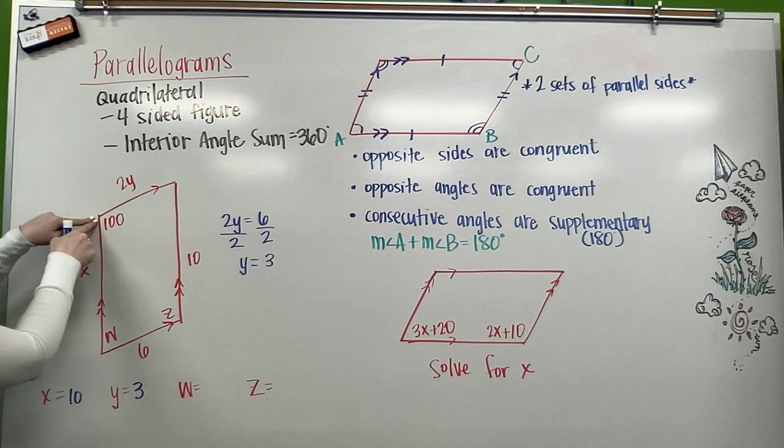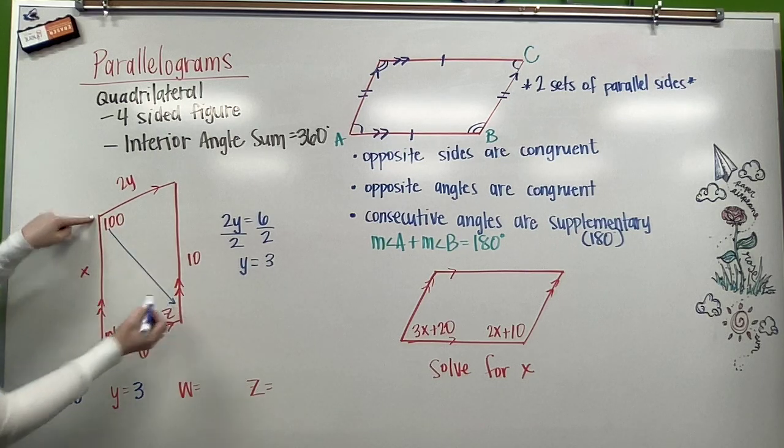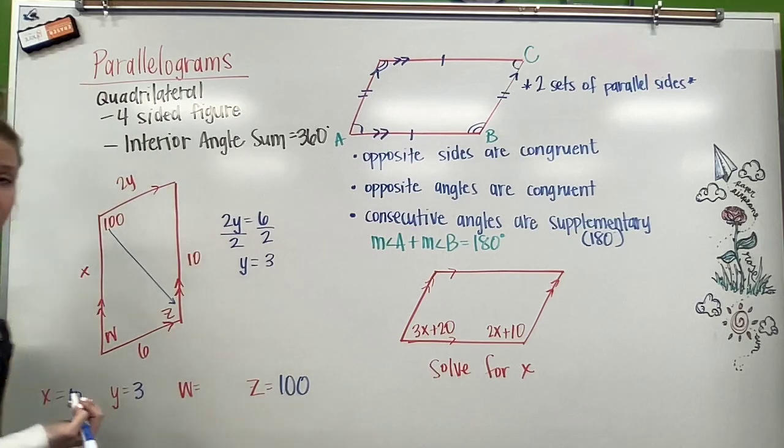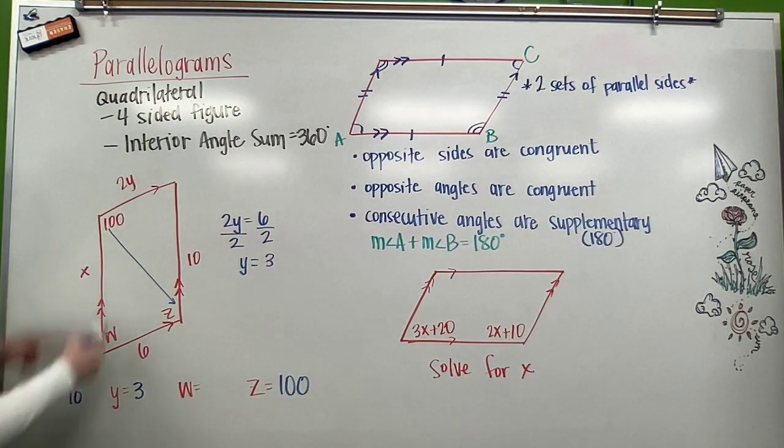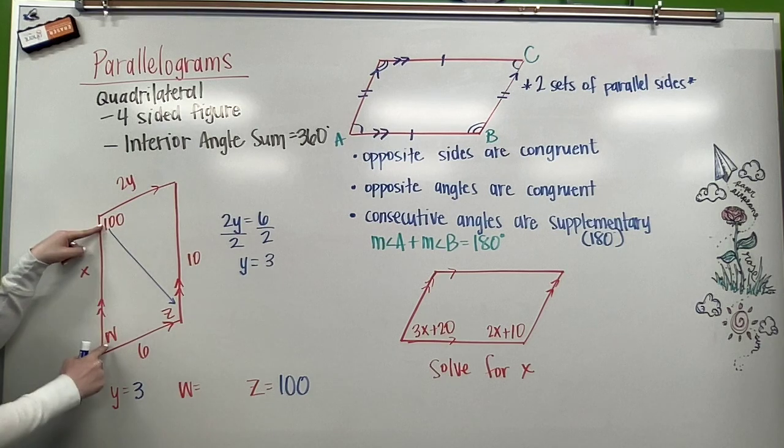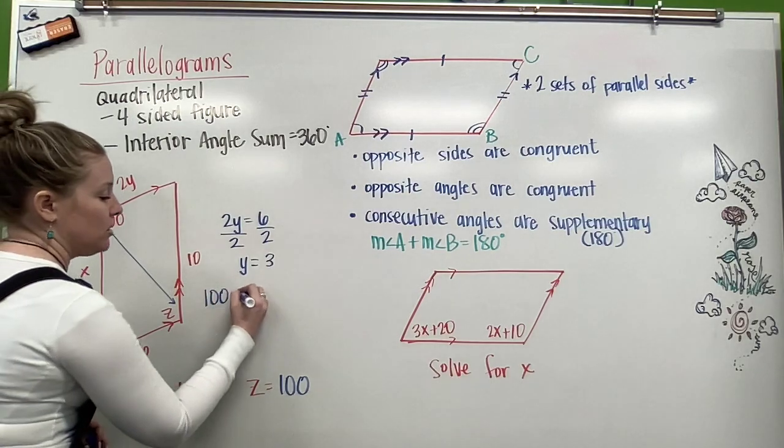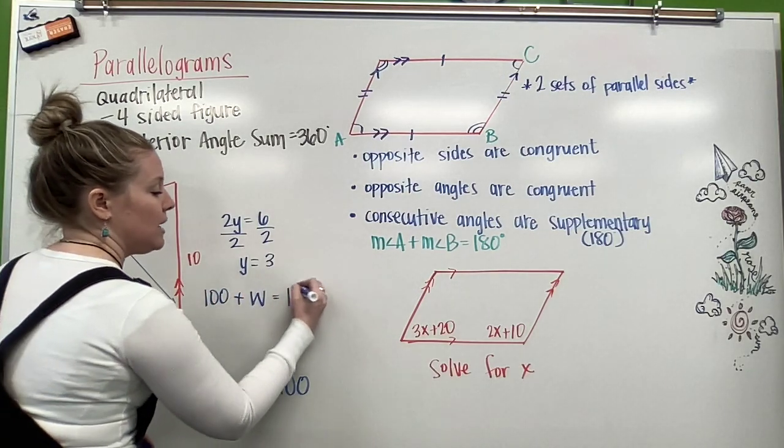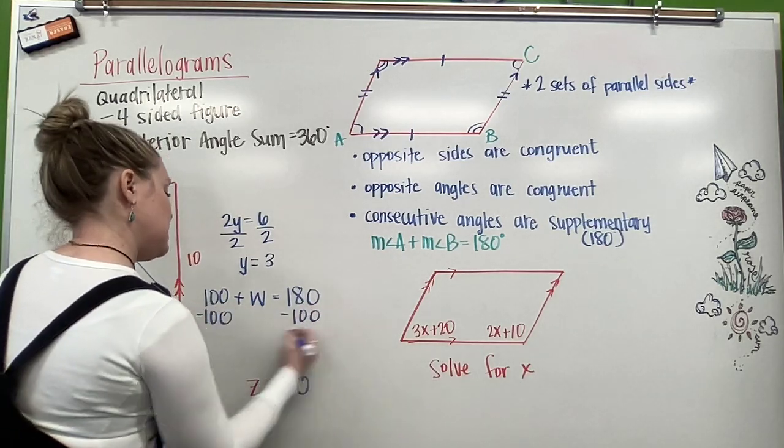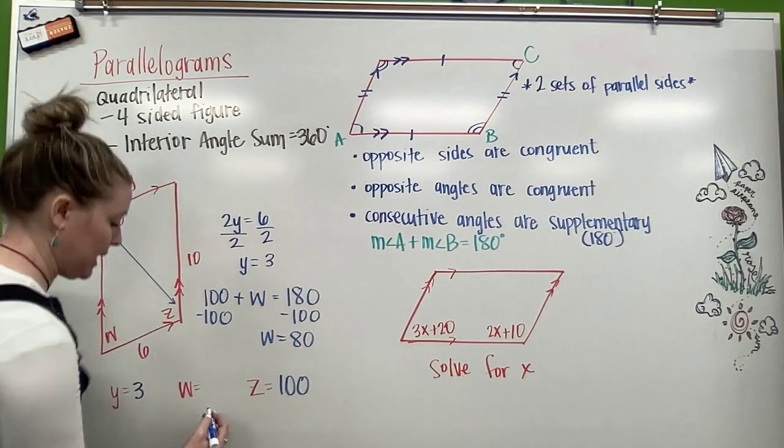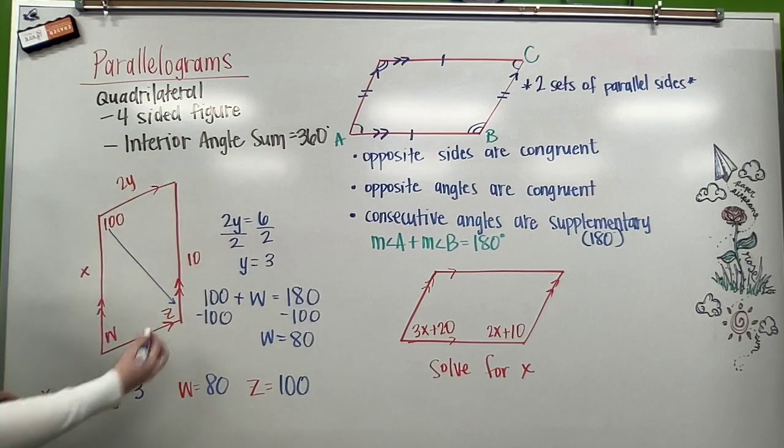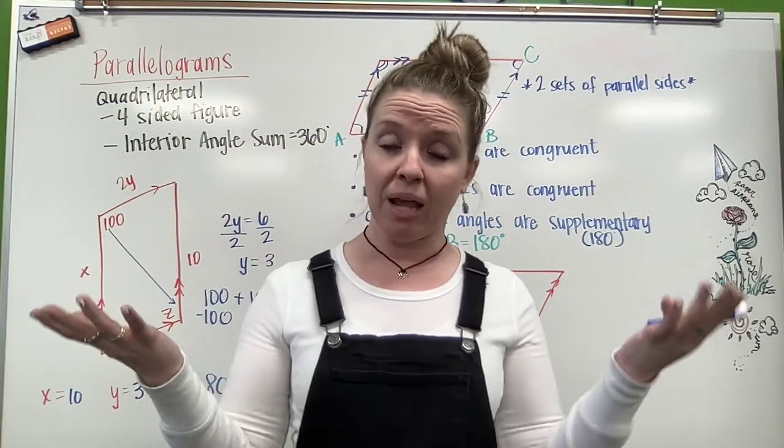So we have 100 degrees in this angle. Its opposite angle is Z. Opposite angles are congruent, so Z is also 100 degrees. Then I have 100 and W. These two angles are consecutive, they're right next to each other. So I know 100 plus W has to equal 180. So I subtract the 100 over, and W equals 80. So we just used all of the properties we talked about in one nice little diagram.